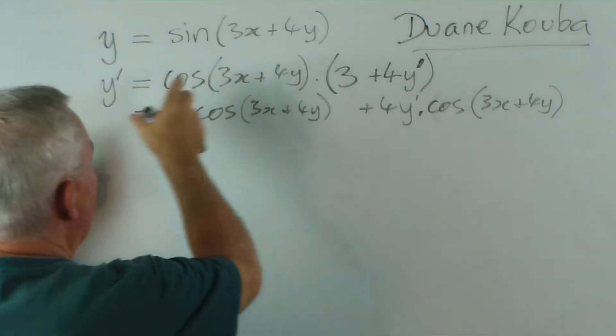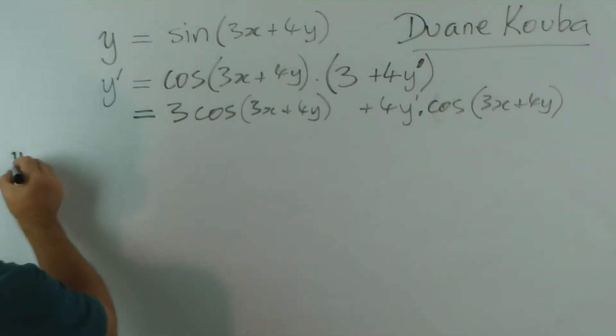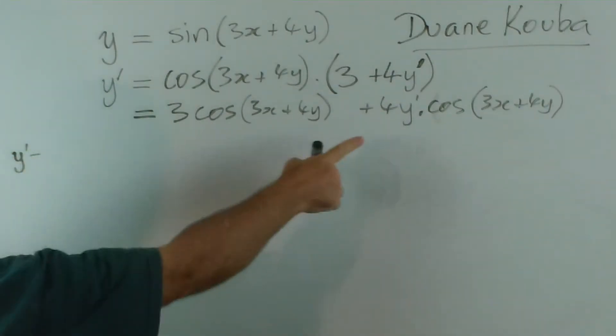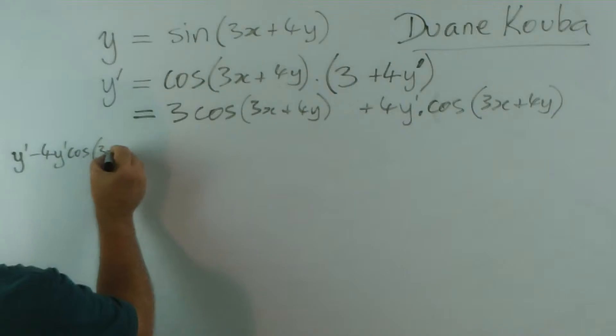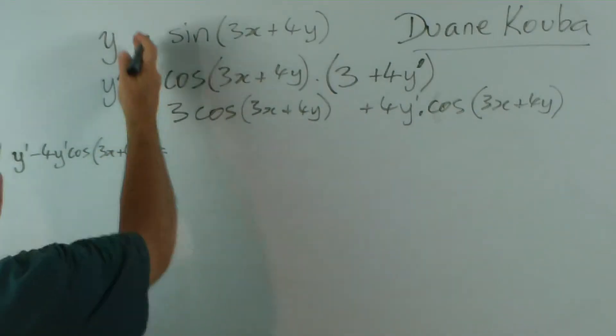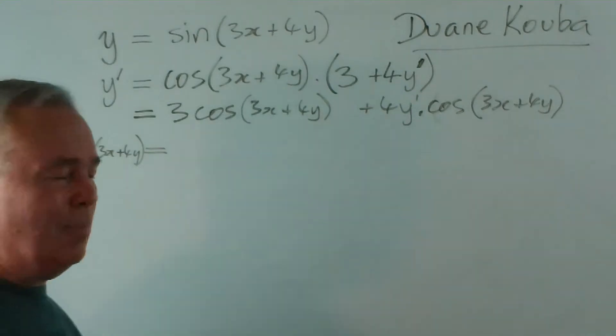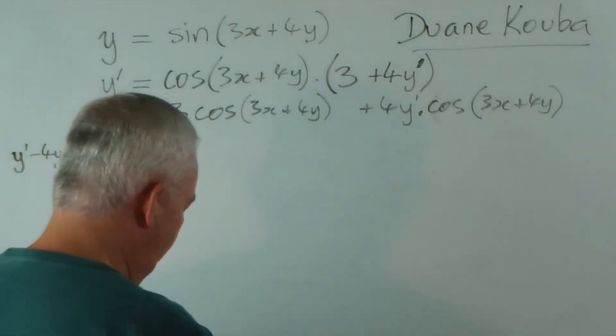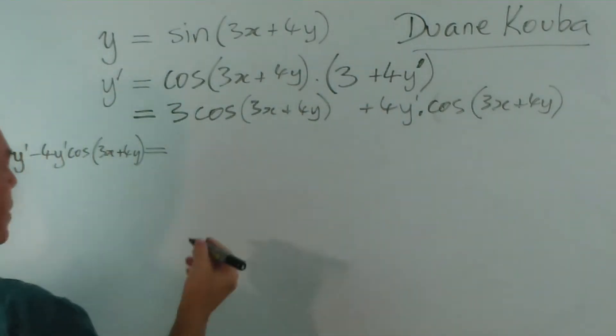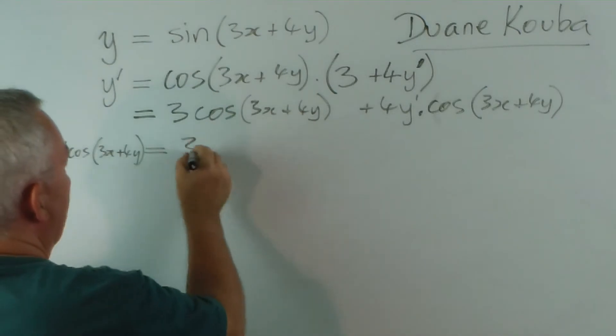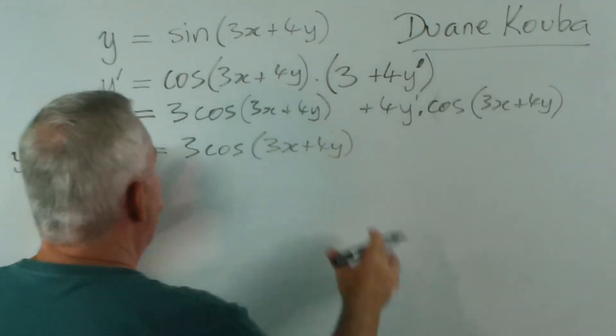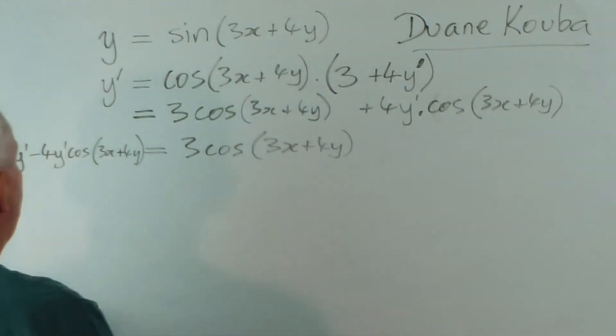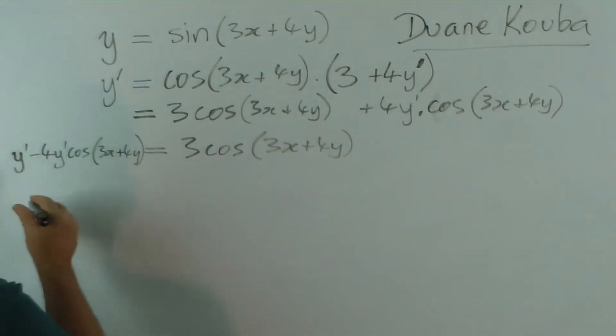I'm going to bring this term over here, and I'll get y dash minus 4y dash cos 3x plus 4y equals. I do like to try and keep the equal signs lined up. I know we're sort of a little bit cramped on the whiteboard. I'll leave this last term here. All we've done in this step is move this across here, and now we have a common factor of y dash.